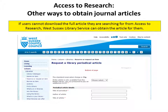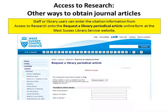Access to Research — other ways to obtain journal articles. If users cannot download the full article they are searching for from Access to Research, West Sussex Library Service can obtain the article for them. Staff or library users can enter the citation information from Access to Research onto the Request a Library Periodical Article online form at the West Sussex Library Service website.